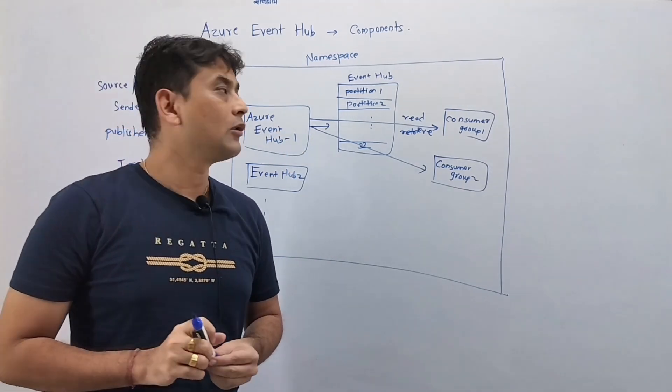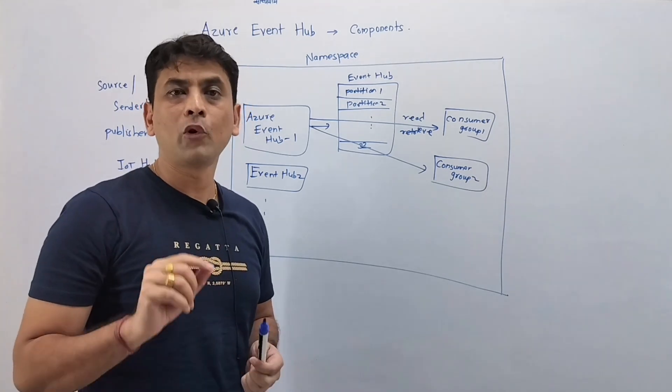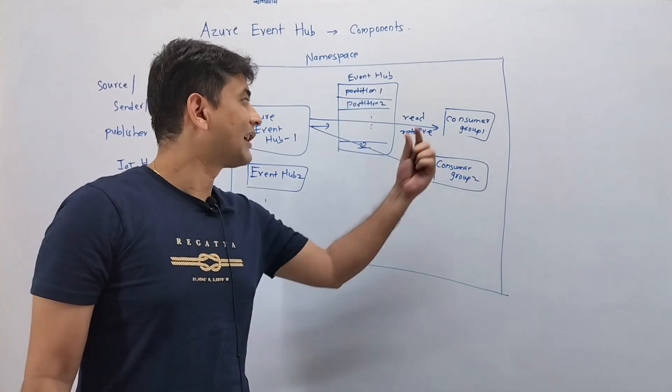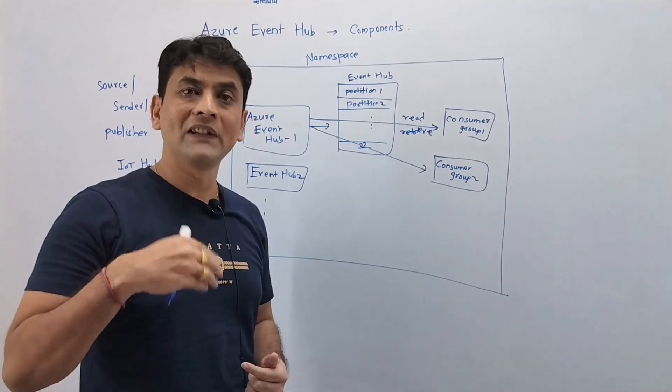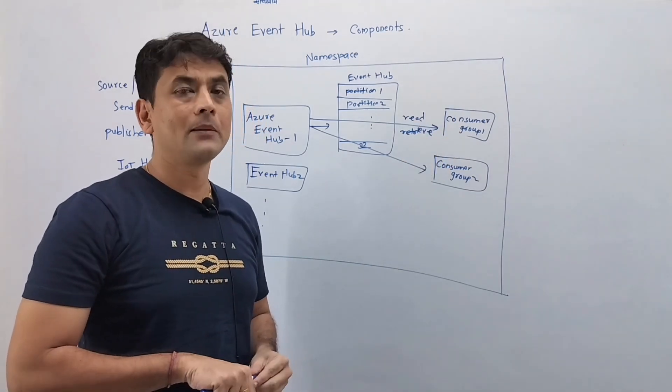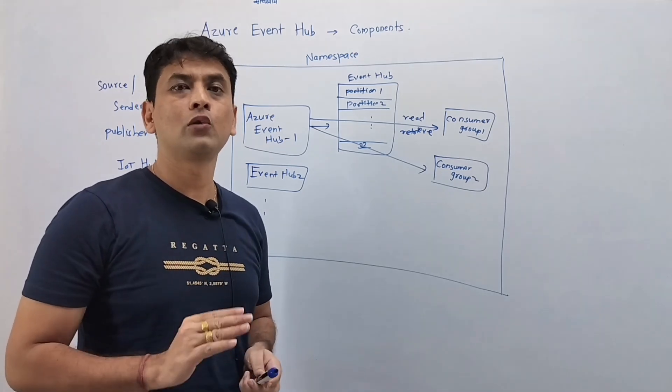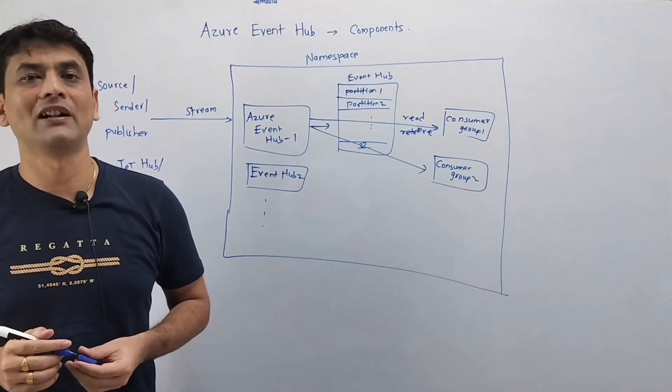And as we discussed at the beginning, we are going to cover each of these components in detail. So for example, what is this partition, then consumer group, a consumer within consumer group, then there is something called throughput unit. Each of these components we are going to discuss in detail in our upcoming videos. So thank you guys.